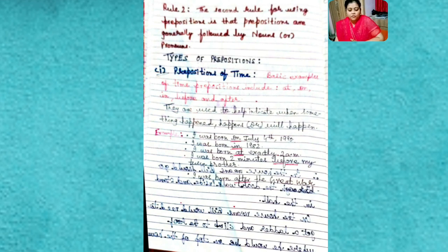There are three types of preposition which I have jotted down. First of all, preposition of time. Basic examples of time prepositions include: at, on, in, before, and after. They are used to help indicate when something happened, happens, or will happen. For example, you can see in my screen now, one example I took and I have changed it into different categories.